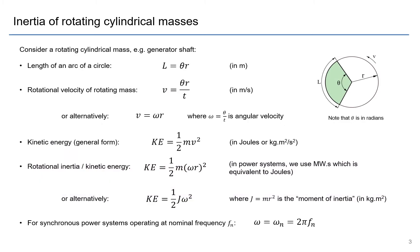So this is a derivation of the inertia of rotating cylindrical masses, and that could be something like a generator shaft. I wanted to start here because I wanted to show how inertia is, traditionally anyway, derived from the physical and mechanical aspects of generators.